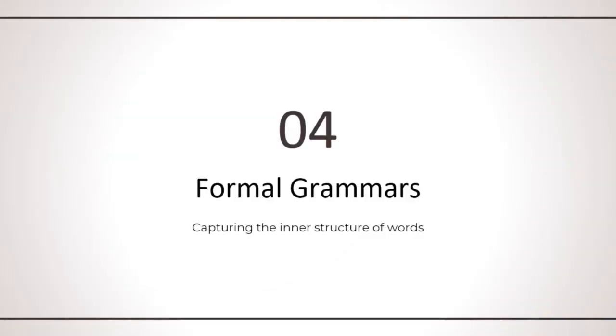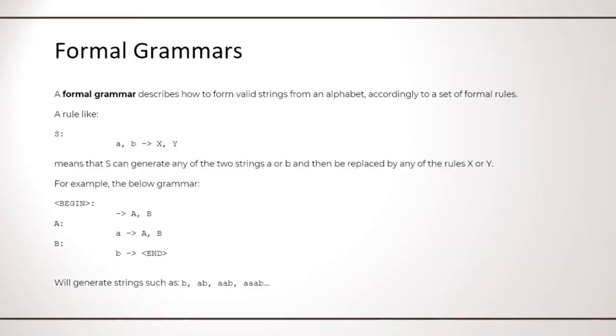In the next section, I will present a formal grammar for Voynich words. Let me first quickly describe what a formal grammar is. A formal grammar describes how to form valid strings from an alphabet accordingly to a set of formal rules. In this presentation, I write rules as shown here.